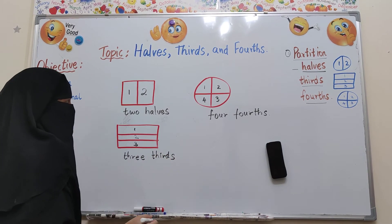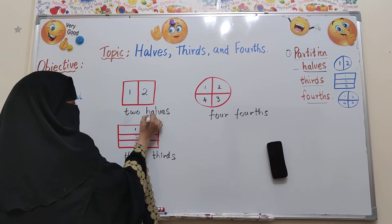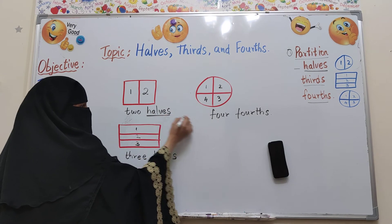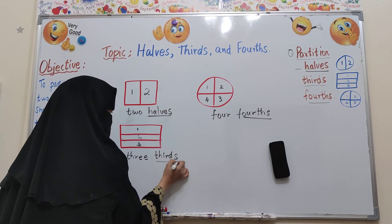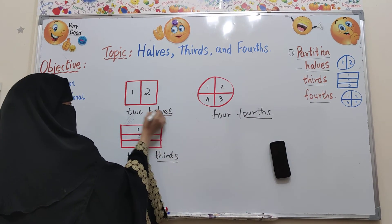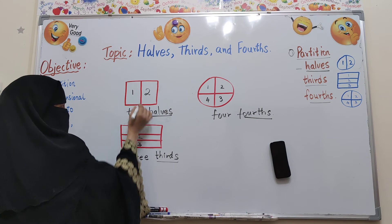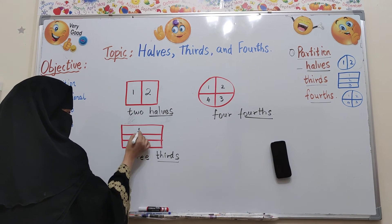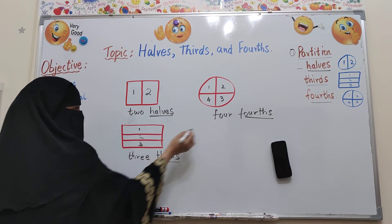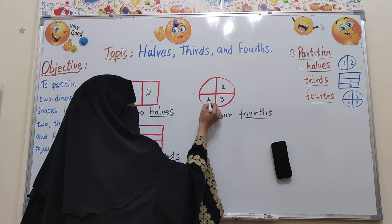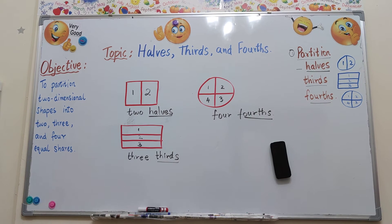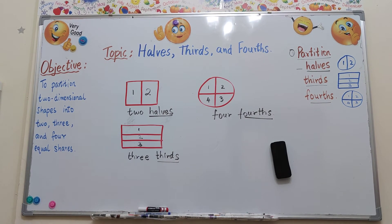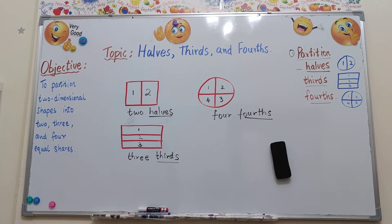So you must remember: halves means two equal parts, thirds means three equal parts, and fourths means four equal parts. This is how you are going to partition two dimensional shapes.